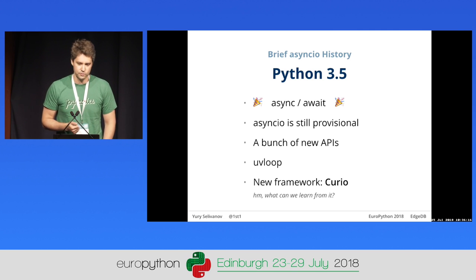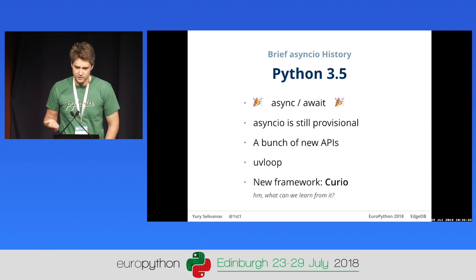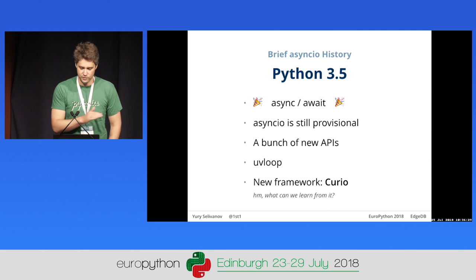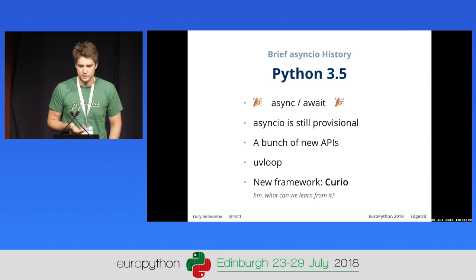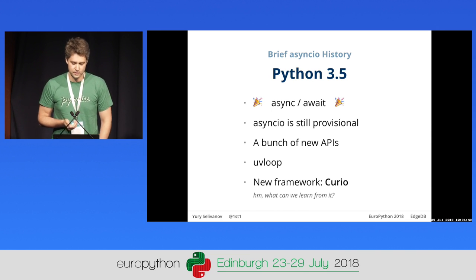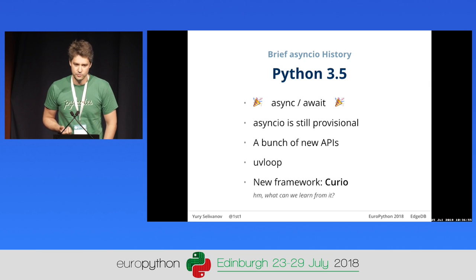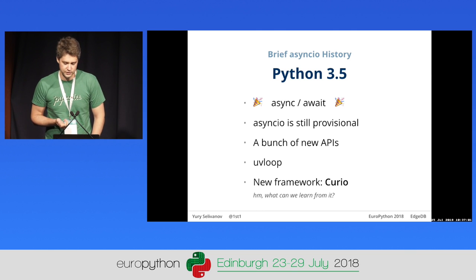Back then, David Beazley created Curio, which was a pretty interesting moment because he decided we don't really need transports, protocols, or callbacks, and that you can basically write programs just with async/await without all that. At first the idea seemed ridiculous to a lot of us, but then we realized he's right — it's perfectly reasonable and possible to write programs with async/await. More importantly, those programs are easier to read and easier to maintain. So we were looking at Curio, thinking about what features we could port to AsyncIO.